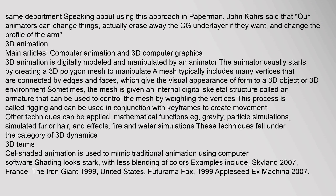3D animation is digitally modeled and manipulated by an animator, who usually starts by creating a 3D polygon mesh. A mesh typically includes many vertices connected by edges and faces, giving the visual appearance of form to a 3D object or environment. Sometimes the mesh is given an internal digital skeletal structure called an armature that can be used to control the mesh by weighting the vertices — a process called rigging — and can be used in conjunction with keyframes to create movement. Other techniques include mathematical functions such as gravity, particle simulations, simulated fur or hair, and fire and water simulations, falling under the category of 3D dynamics.